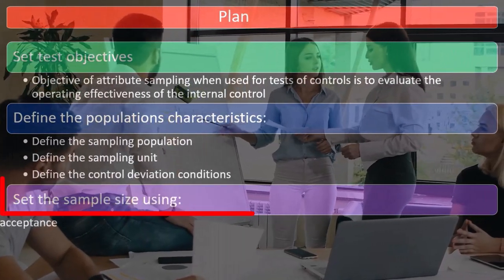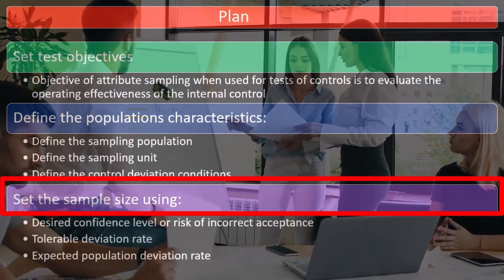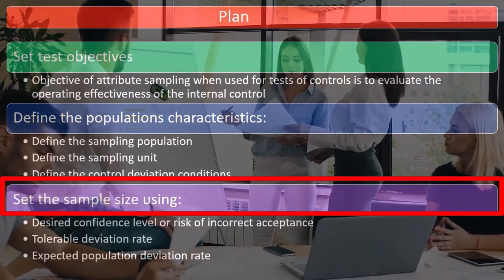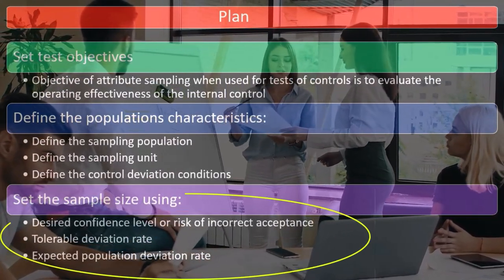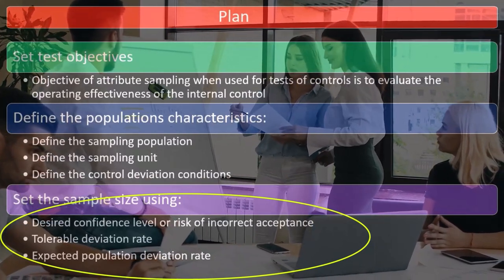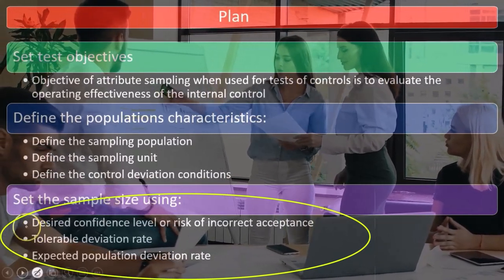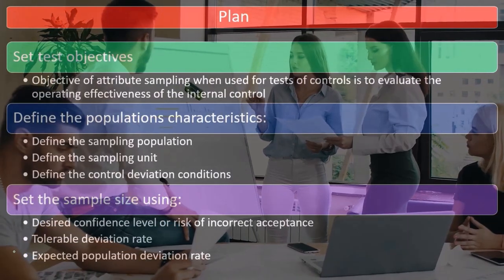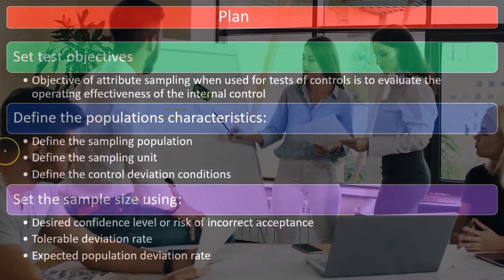Next, we will set the sample size using desired confidence level or risk of incorrect acceptance, tolerable deviation rate, and expected population deviation rate. Again, we will go into these items in more depth shortly.